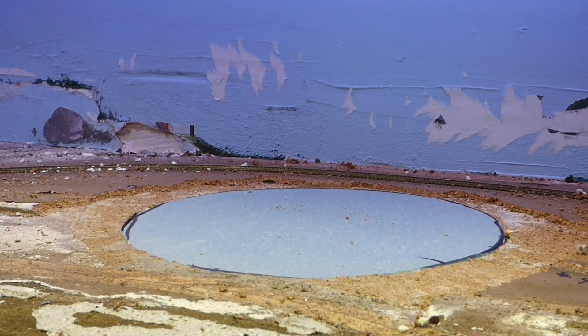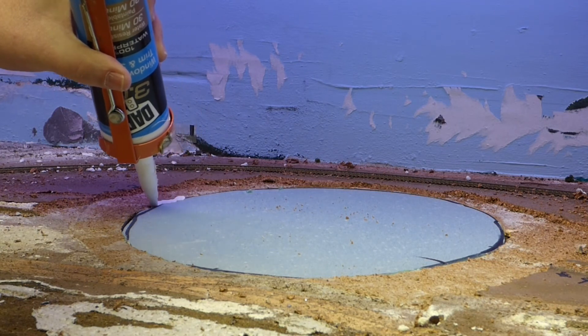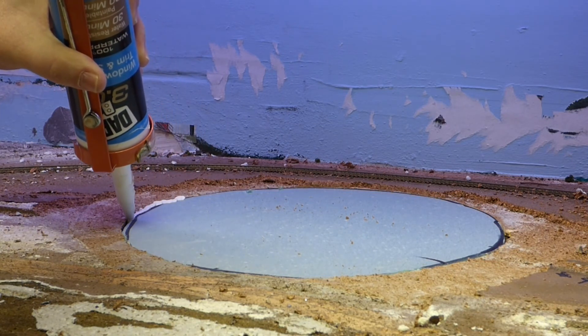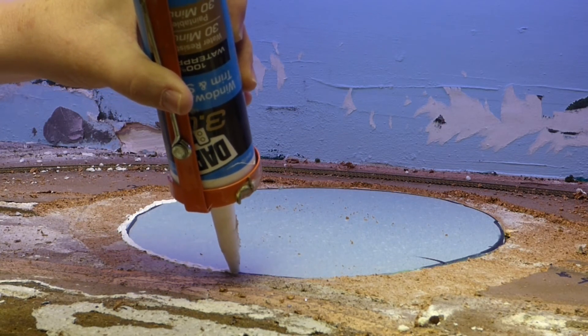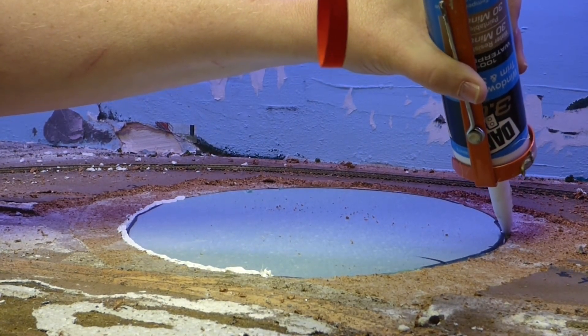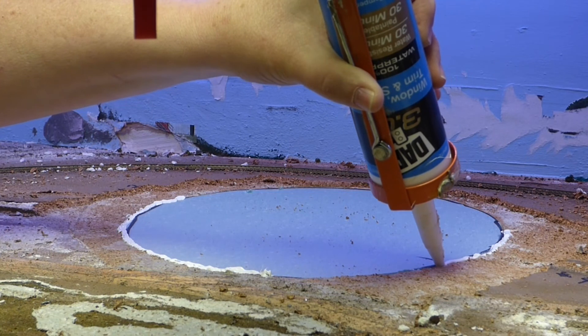All right so I've got the caulk now and I usually use the DAP 230 caulk, the gray because it's paintable and very easy to work with, but I don't happen to have any right now so I'm going to use what I have on hand which is silicone. Okay so the caulk is open and let's run a bead right around here, nice and heavy, and I want to let it squeeze down into the holes.